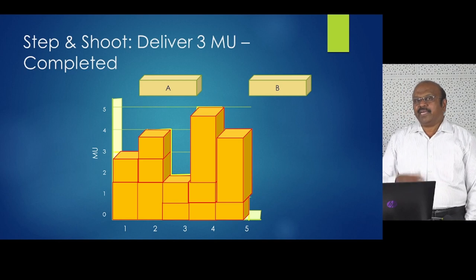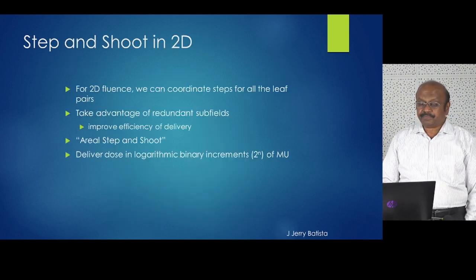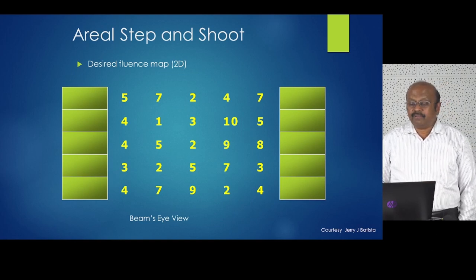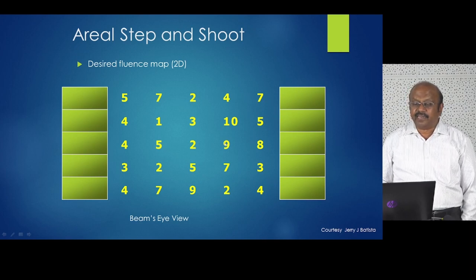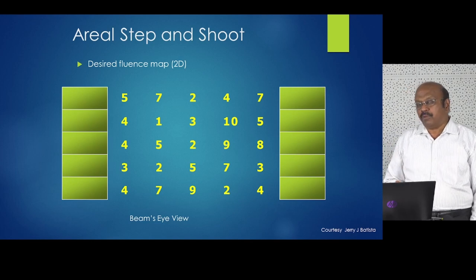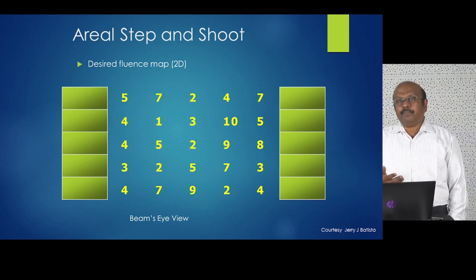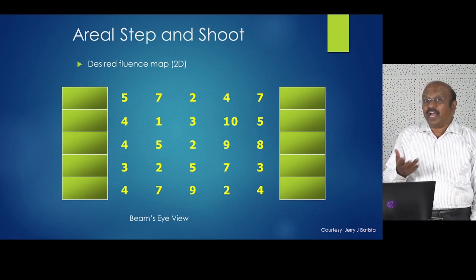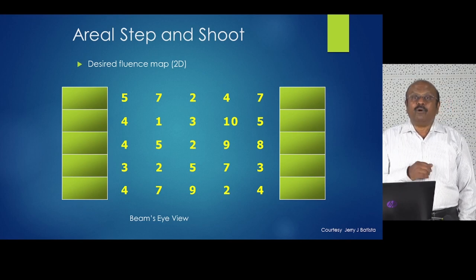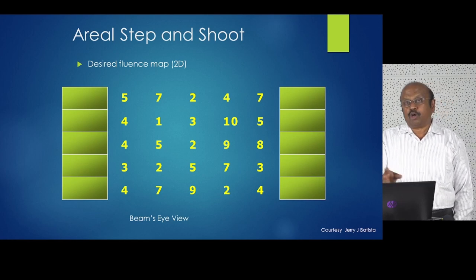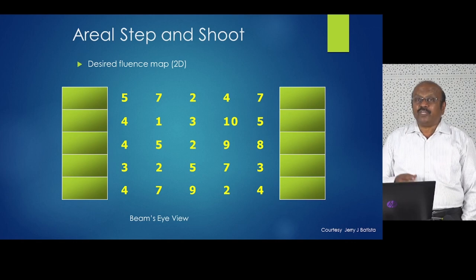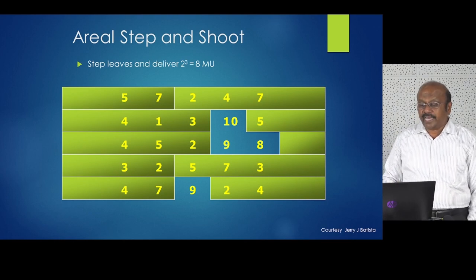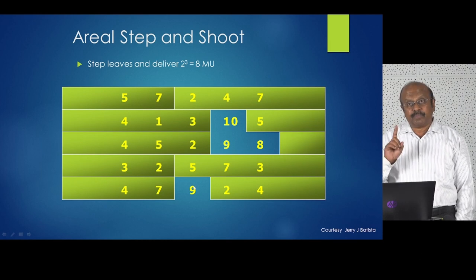Now let us look at it in two dimensions — a 2D fluence map. Let's say I want to give 7 Gy here, 10 Gy here, 5 Gy here, 8 Gy, and 9 Gy. How do I do it? I use a formula based on 2 to the power of N. Taking 2^3 = 8, the areas where I can deliver 8 MU form segment number 1. There is no other area needing more than 8 MU, so I deliver 8 MU here and the residuals become 2, 1, 0, and 1.